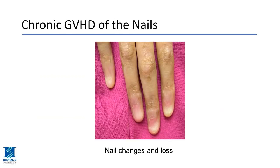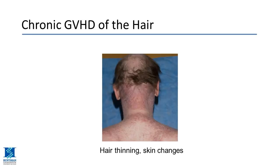The nails can be affected — in one patient example, he actually lost his nail bed. Hair follicles can also be involved by graft-versus-host disease, resulting in alopecia, hair thinning, and hair loss.